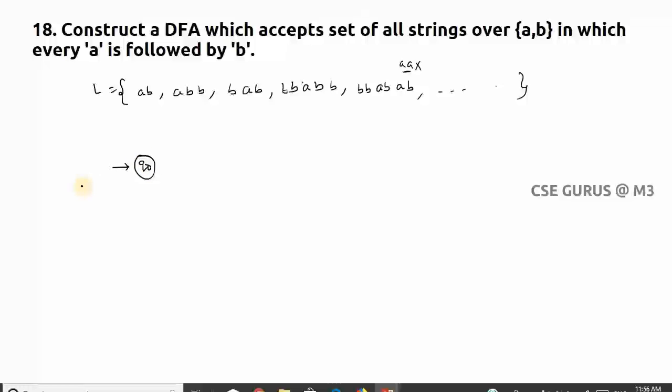So how to solve this question? I'll take initially q0 as the initial state. Now you can see what is the first symbol - of course you can get either 'a' or 'b', not a problem. But if I get 'a' there must be 'b' here. So 'ab' is the initial one, so I can put final state here.